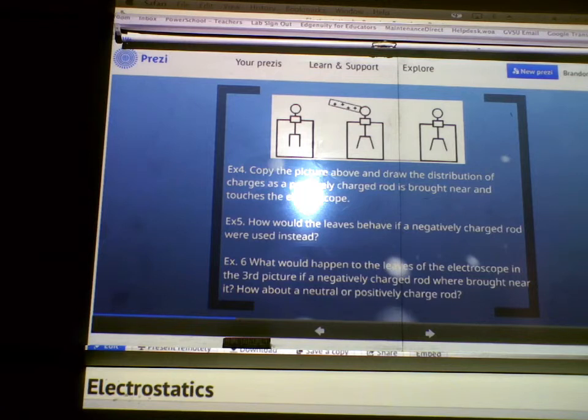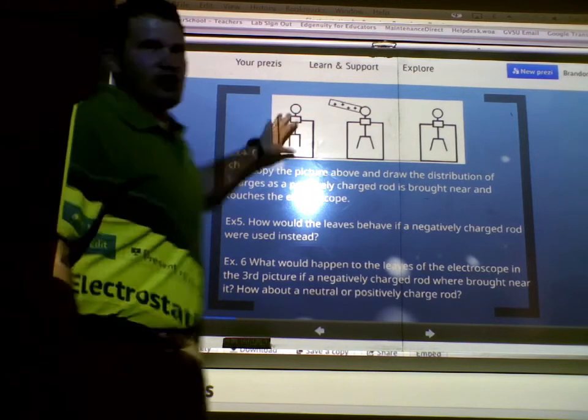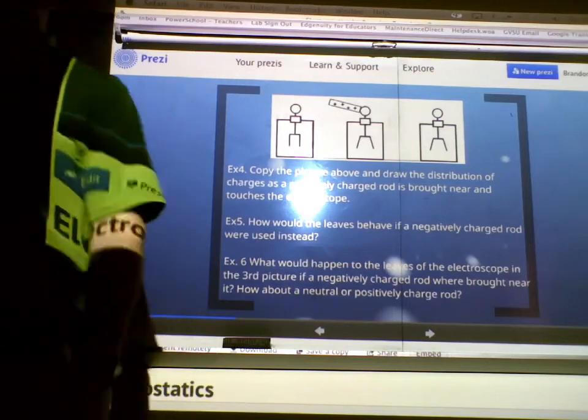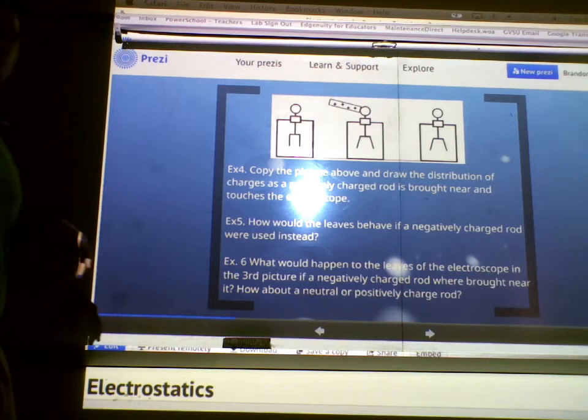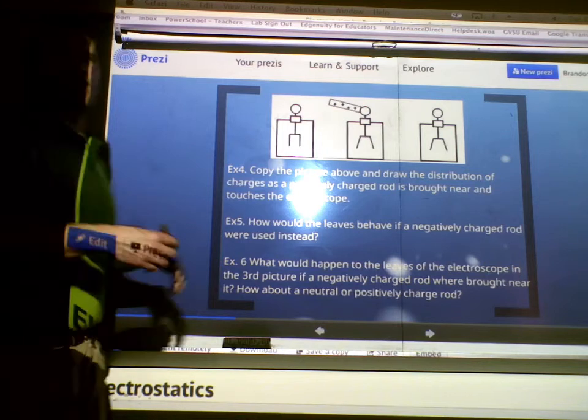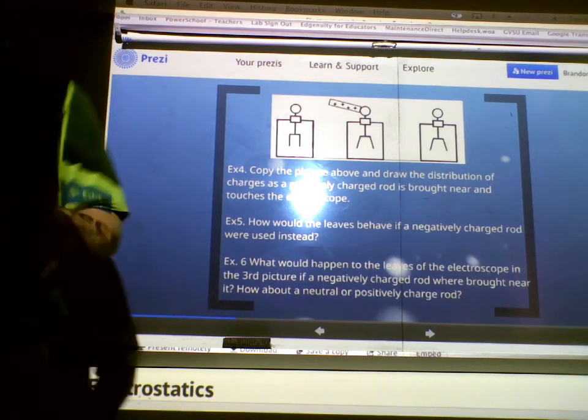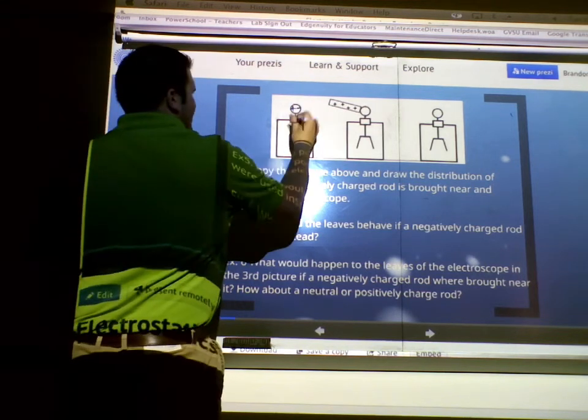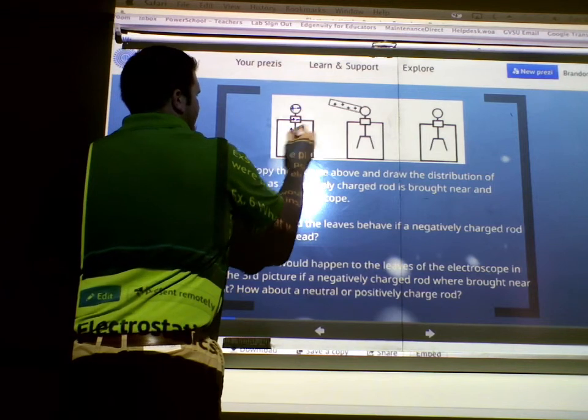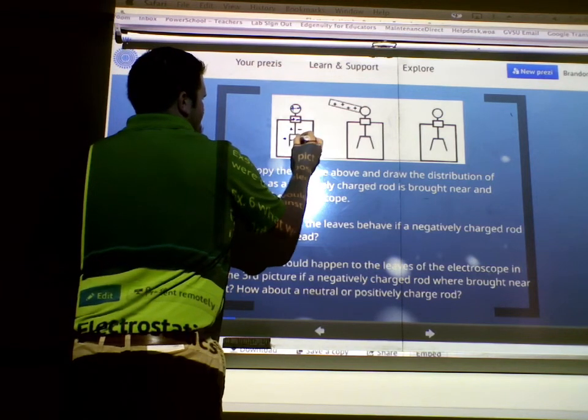All right, so example four. Copy the picture above and draw a distribution of charges. The positively charged rod is brought near a type 2 electroscope. So, to start out, what do we have? On this electroscope, what do we have? Electrons and protons. We have an equal number. So, those protons and electrons, they are evenly distributed throughout the electroscope.